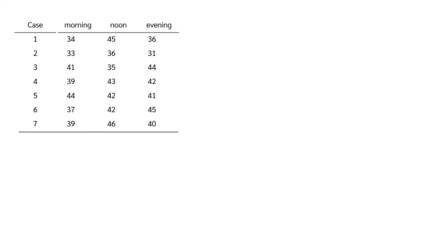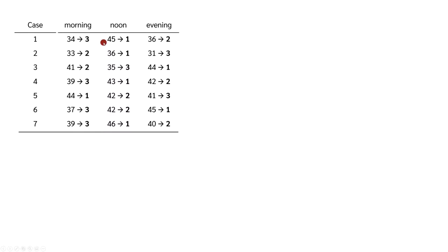Now let's look at the equations behind the Friedman test and recalculate this example by hand. Here we have the measured values of seven people. In the first step, we assign ranks to the values by looking at each row separately. In the first row, 45 is the largest value and gets rank 1, then 36 gets rank 2, and 34 gets rank 3. For the second row, 36 is the largest and gets rank 1, then 33 gets rank 2 and 31 gets rank 3. We do this for all rows. Afterwards, we calculate the rank sum for each time point: in the morning we get 17, at noon 11, and in the evening 14.